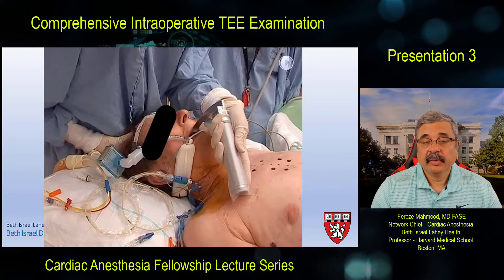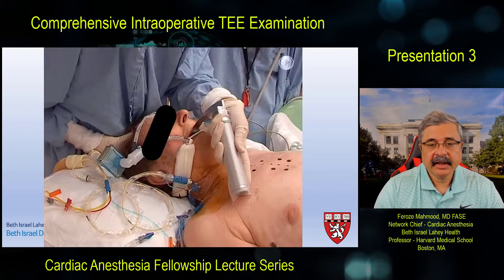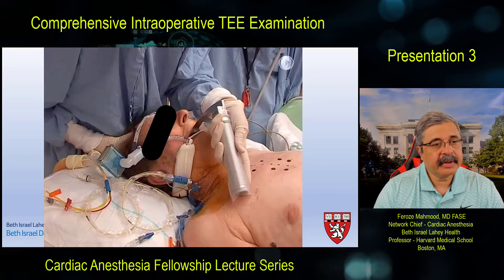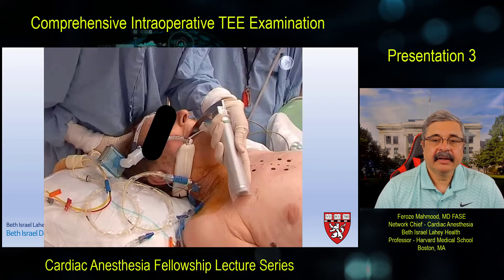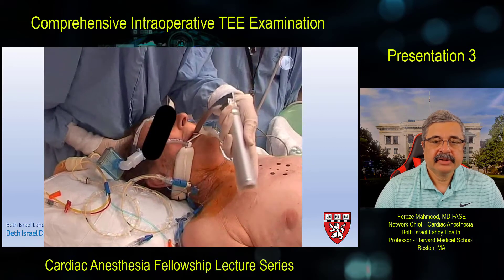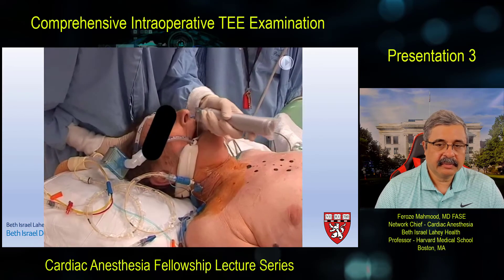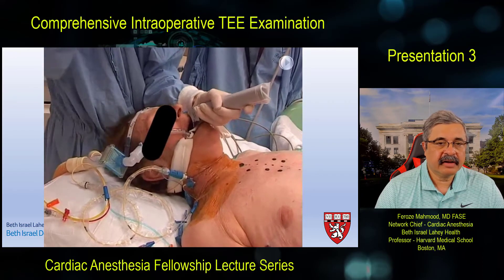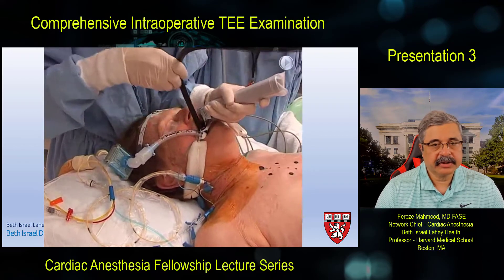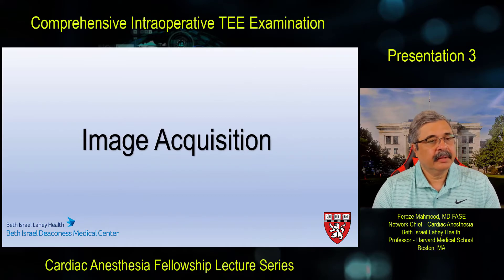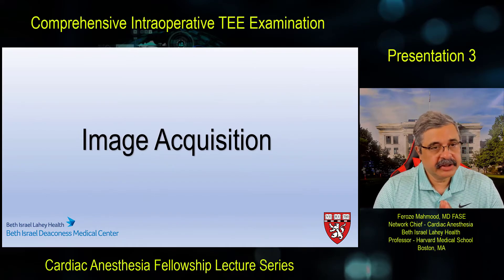In certain situations when patients have upper esophageal and pharyngeal abnormalities, we now resort early and liberally to laryngoscopic insertion — using a video laryngoscope to insert the TEE probe under direct vision rather than blindly inserting and causing pharyngeal lacerations, bleeding, edema, or other upper esophageal problems. You perform laryngoscopy just like putting in an endotracheal tube, visualize the esophagus under direct vision, and the TEE probe is handed to the operator and inserted.